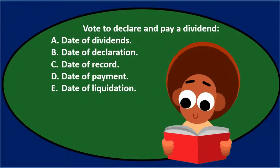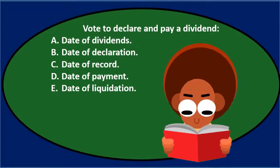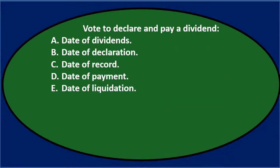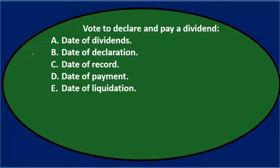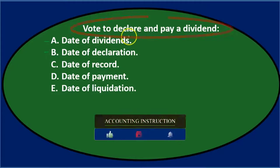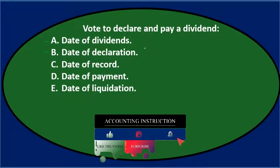We will go through this again using the process of elimination. Vote to declare and pay dividends. A, date of dividend — maybe, sounds nice, it's got the two D's in there. B, date of declaration — also sounds pretty neat. It could be the case if we're declaring dividends, so either the date of the dividend or the date of the declaration. Those two sound reasonable.